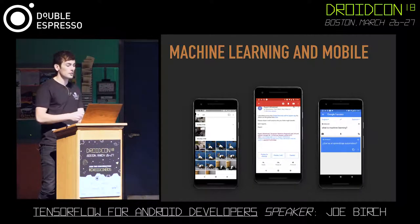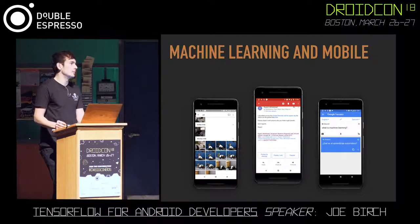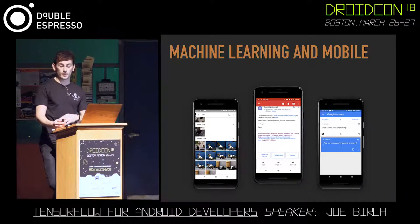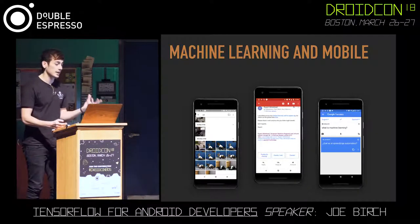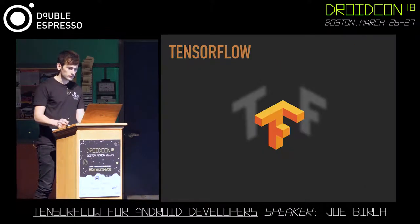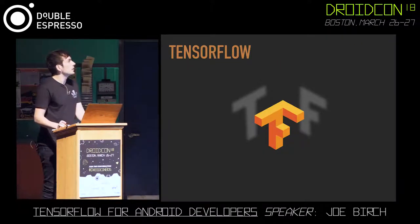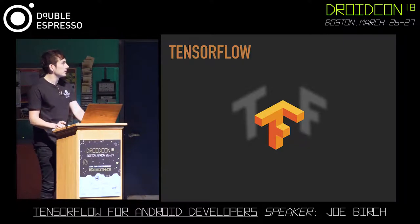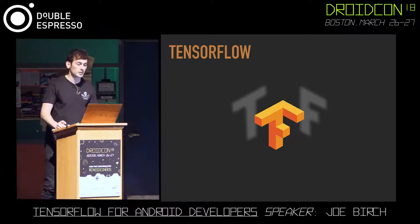There are other places we can use machine learning in our own apps. For example, our app on iOS uses machine learning to automatically tag images with tags based on the image that has been uploaded. This all sounds pretty complex, but luckily we have a tool called TensorFlow available to us.